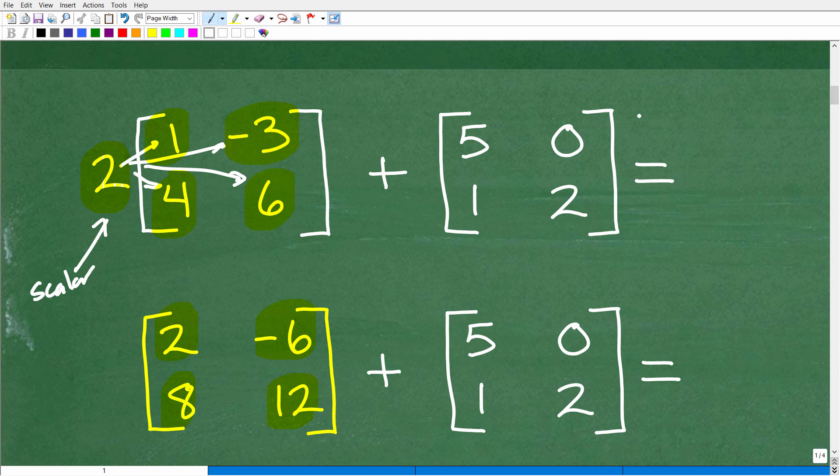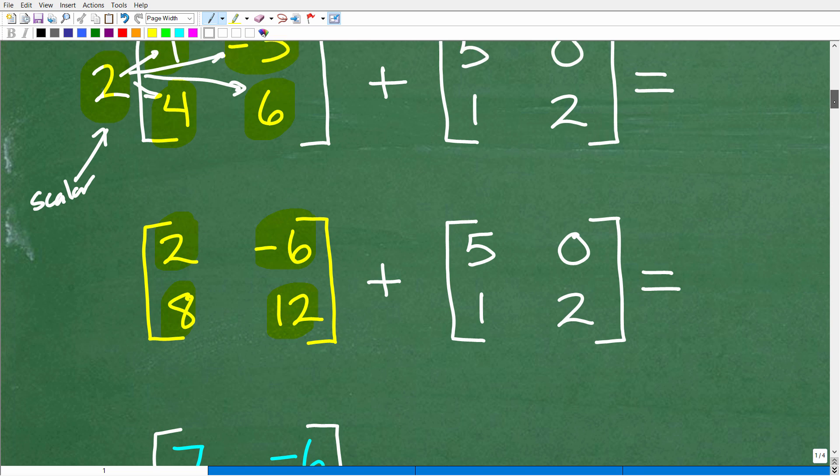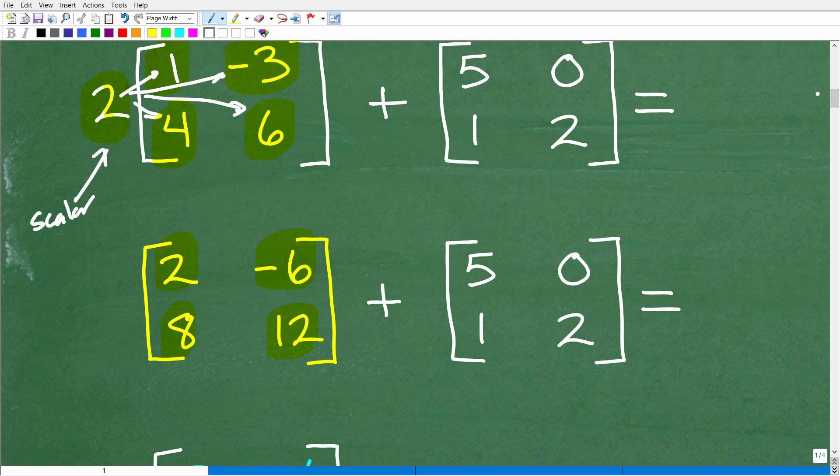Basically, this is like the order of operations, right? We've got to take care of multiplication before we deal with addition. So any time you're adding or subtracting two matrices, they have to be the same dimension. That's another word for something called order, but basically the same size.